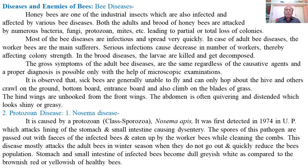This disease mostly attacks adult bees in the winter season, when bees do not go out, and quickly reduces the number of bees in the colony. The stomach and small intestine of infected bees become dull grayish-white as compared to the brownish-red or yellowish color of healthy bees. These are the main symptoms of Nosema disease.